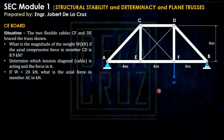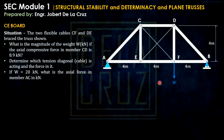To analyze this truss, theoretically it is indeterminate. However, take note — these two members are cables. Cables don't resist compression. So if a cable member receives compressive force, it can be neglected. Taking advantage of that, we can simplify the truss into a determinate truss.